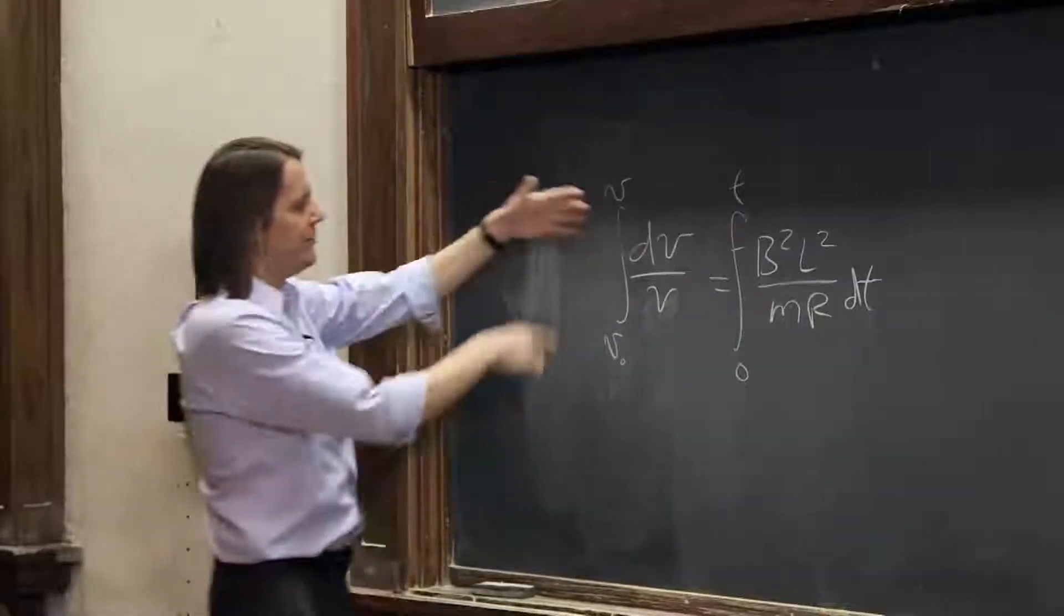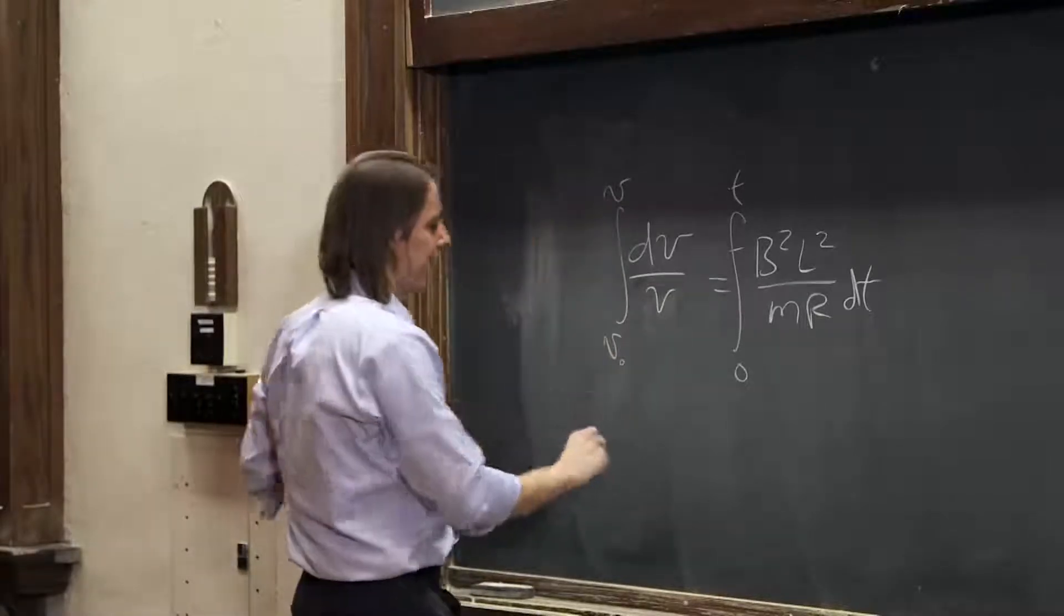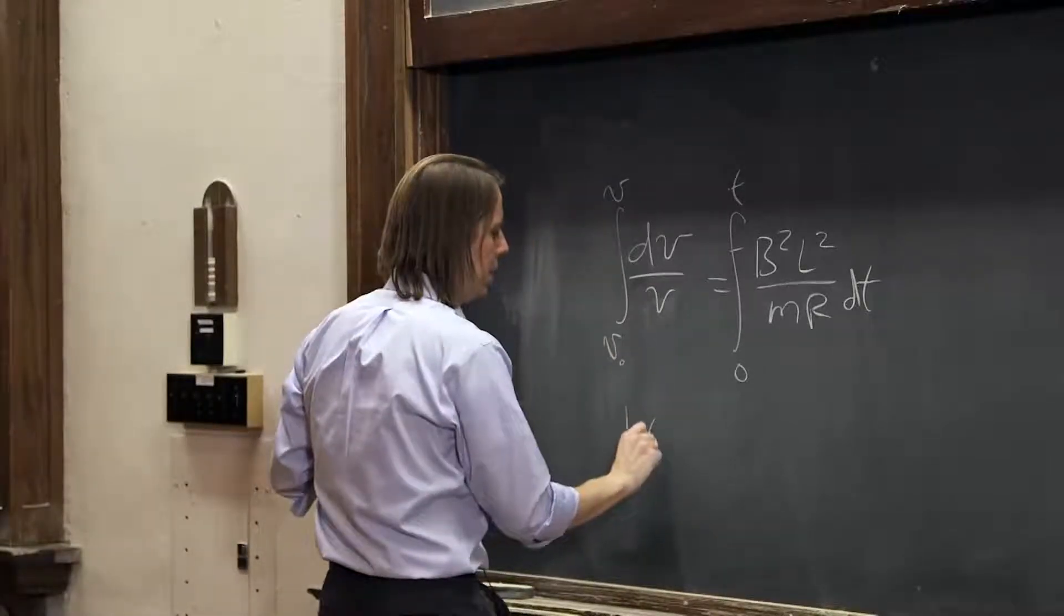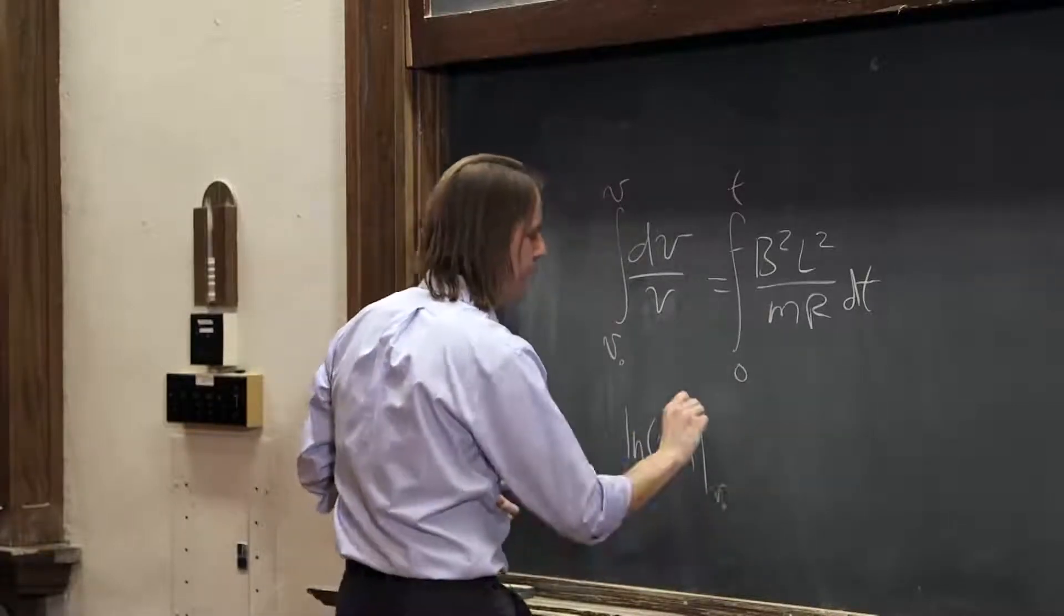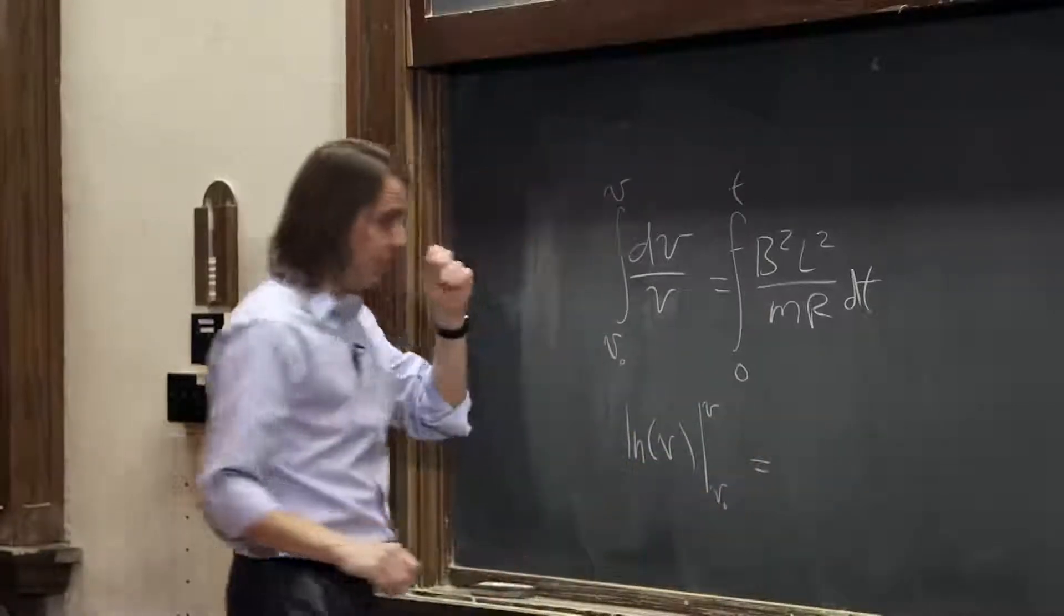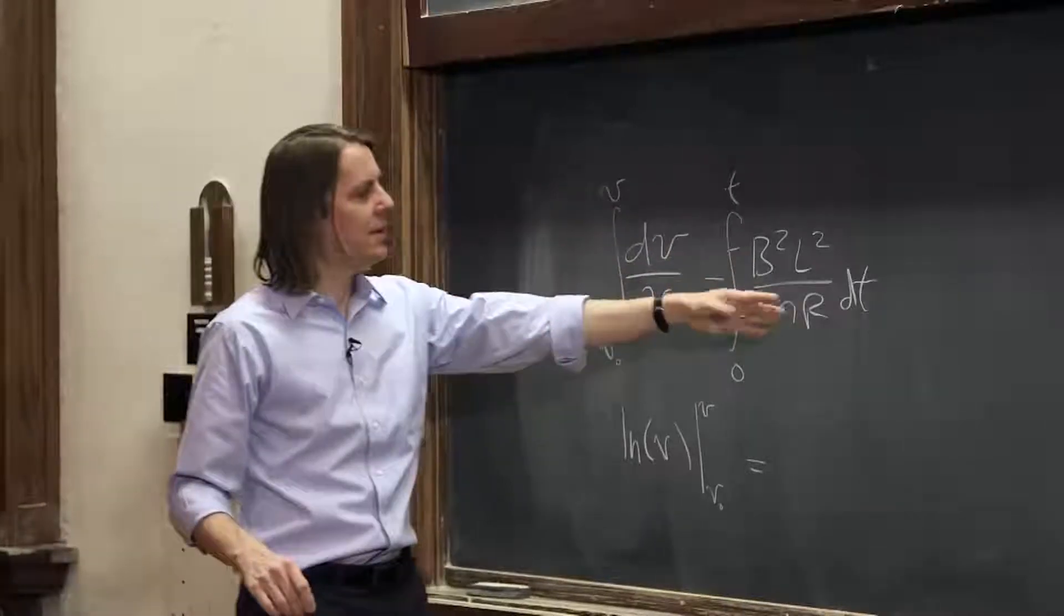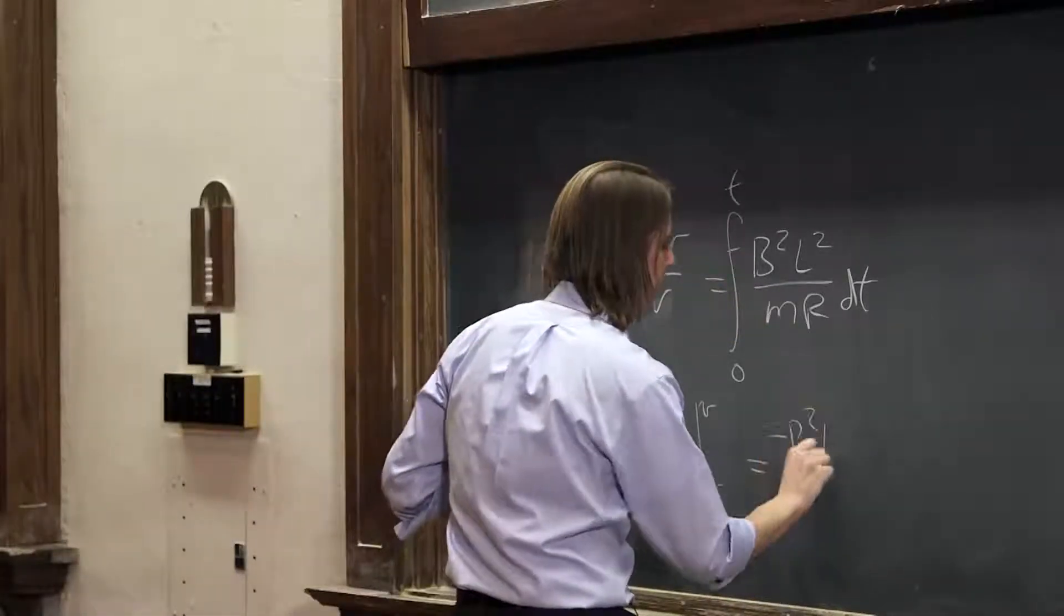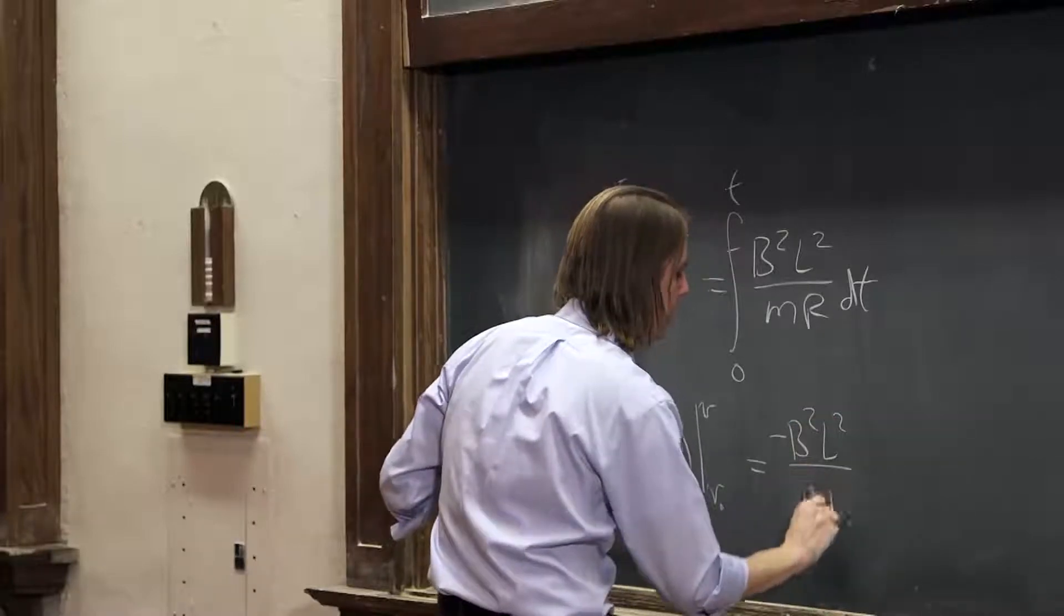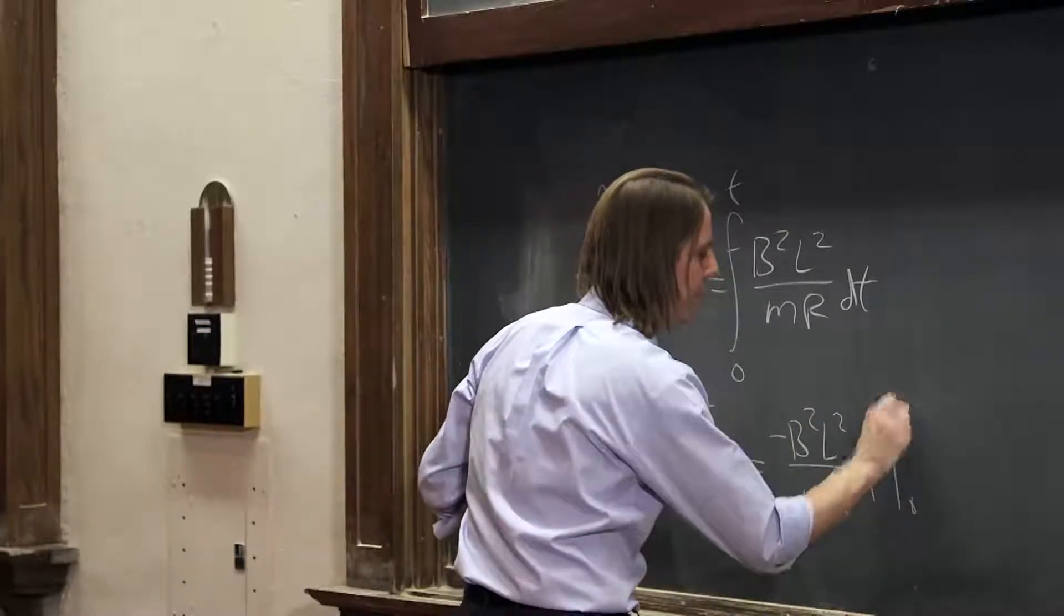So the integral of dv over v, the integral of dx over x, is the natural log of x, or in this case v, evaluated v naught to v. And the integral of that constant times dt is just that constant times t, minus b squared L squared over m R t, evaluated from zero to t.